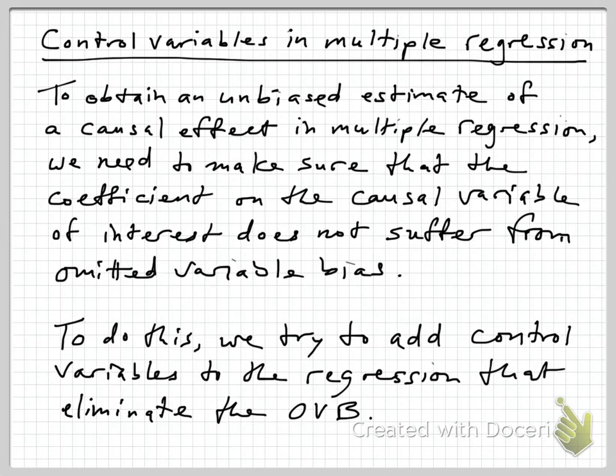If we're interested in obtaining an unbiased estimate of some causal effect by using multiple regression, what we want to do is make sure that the coefficient on that causal variable of interest doesn't suffer from omitted variable bias. One important strategy is to add control variables to the regression that eliminate the omitted variable bias. So we want to talk today about control variables.